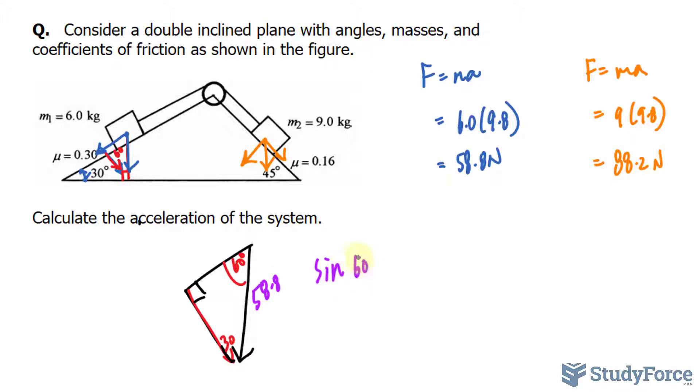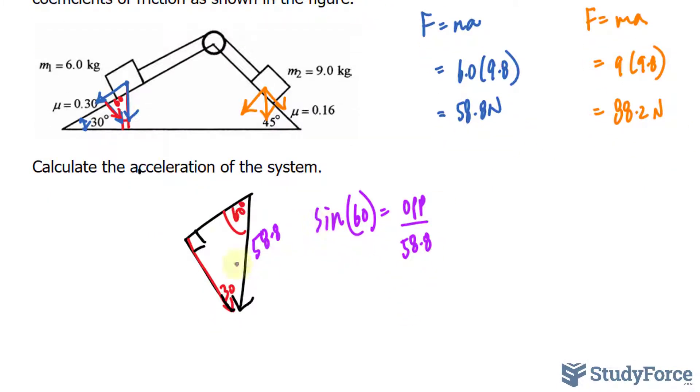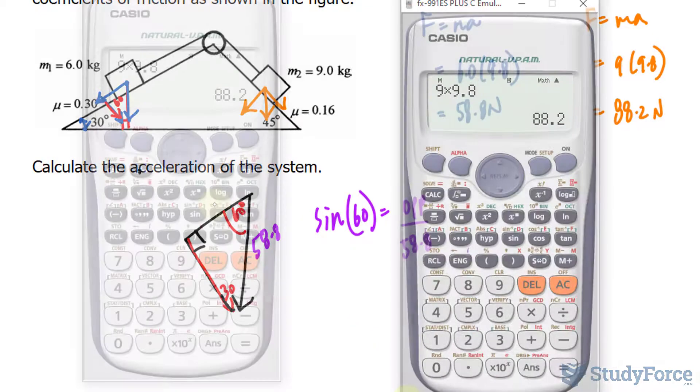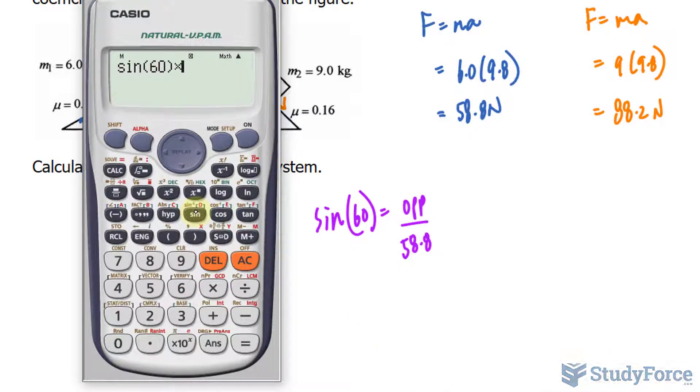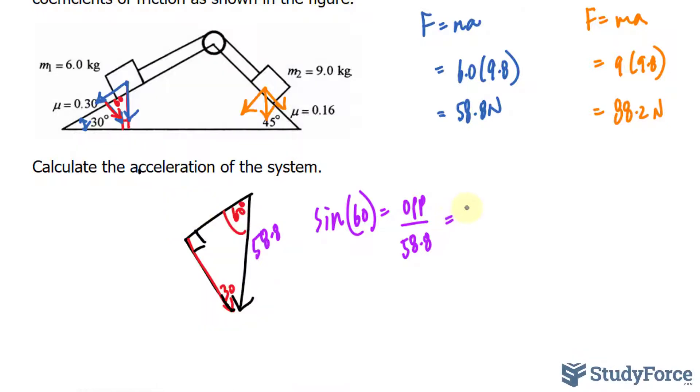Sine 60, opposite is what we're looking for, so I'll represent it as OPP, and then we have 58.8. Solving for OPP, we get that magnitude. So sine 60 times 58.8 gives us 50.9 newtons. That is the magnitude of that vector.